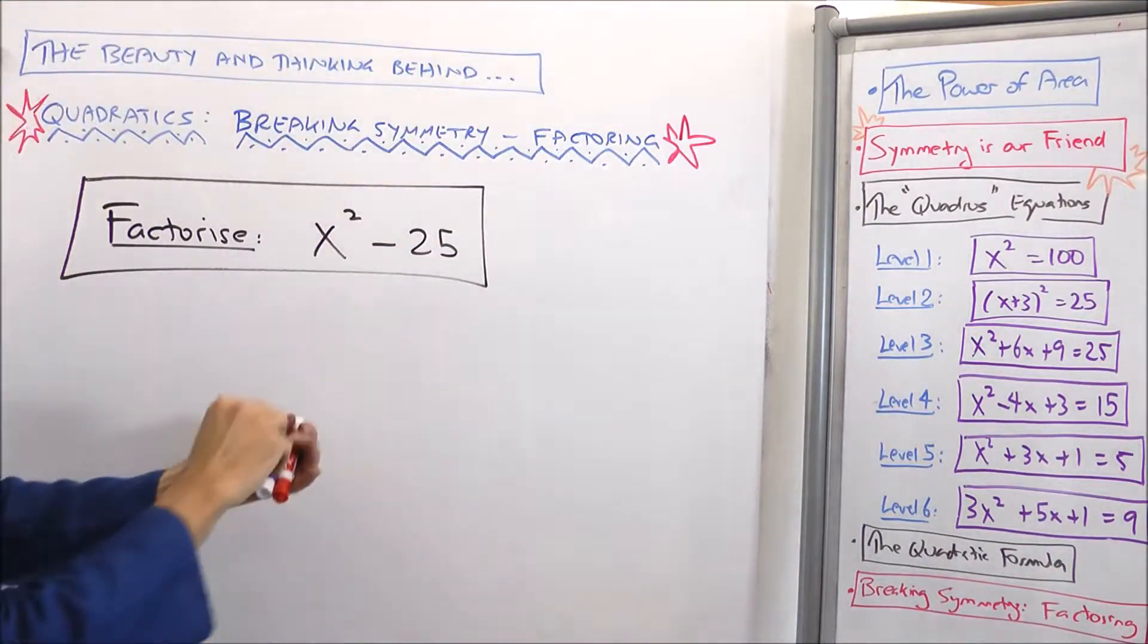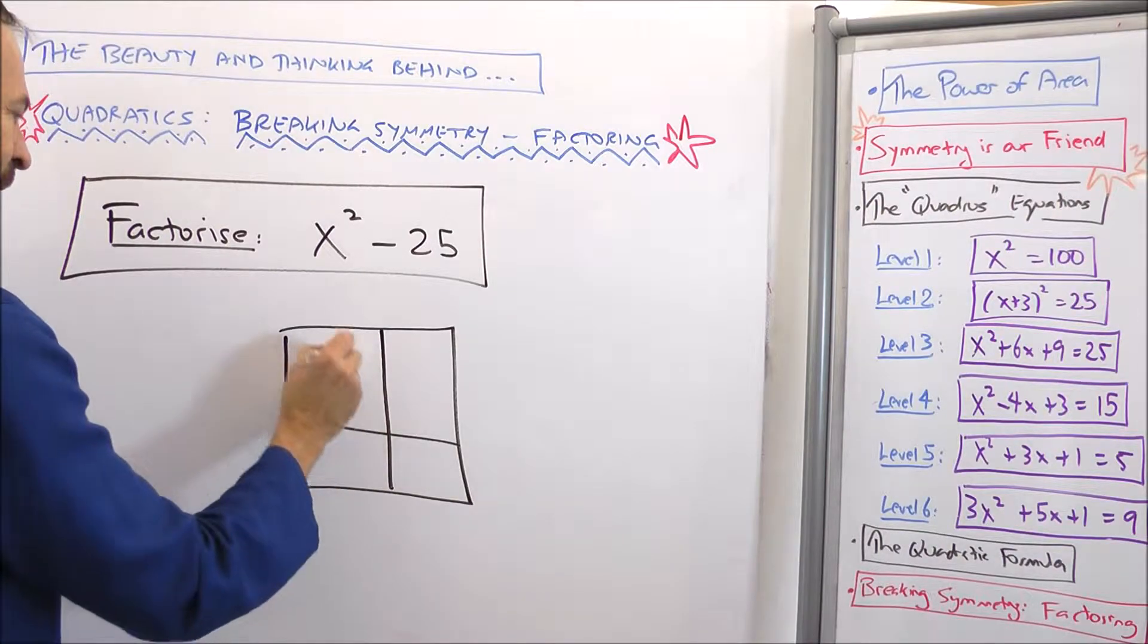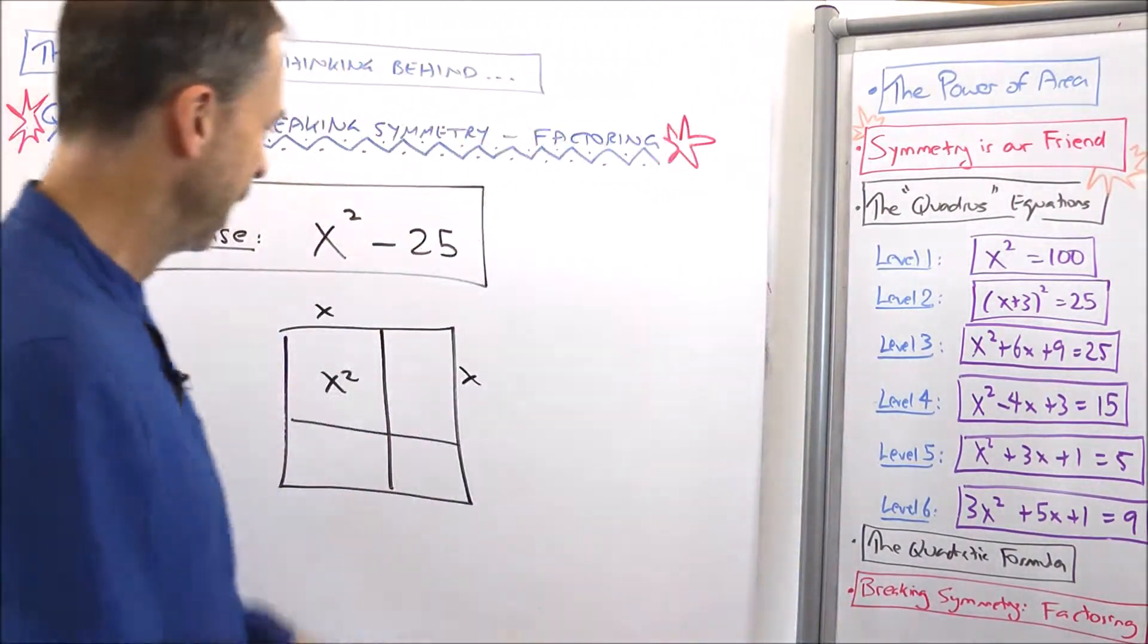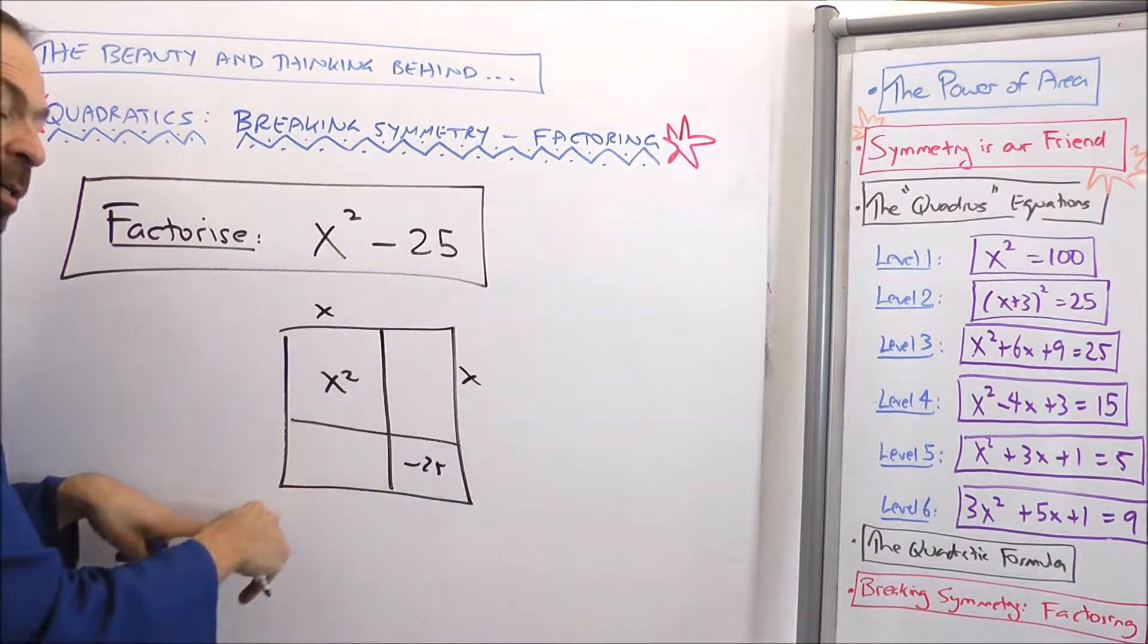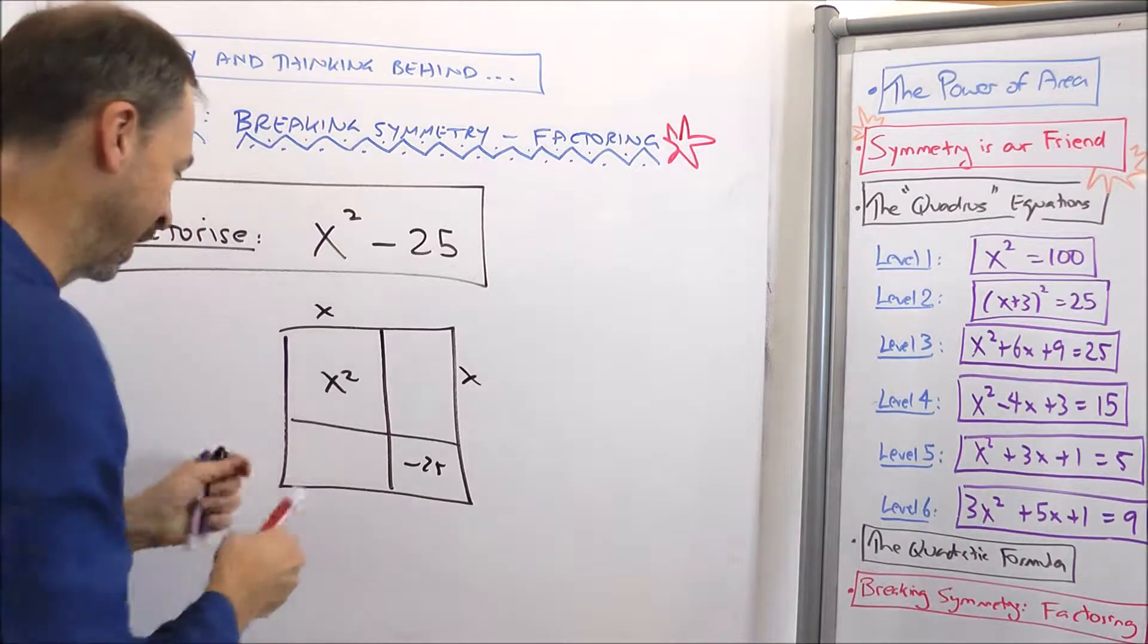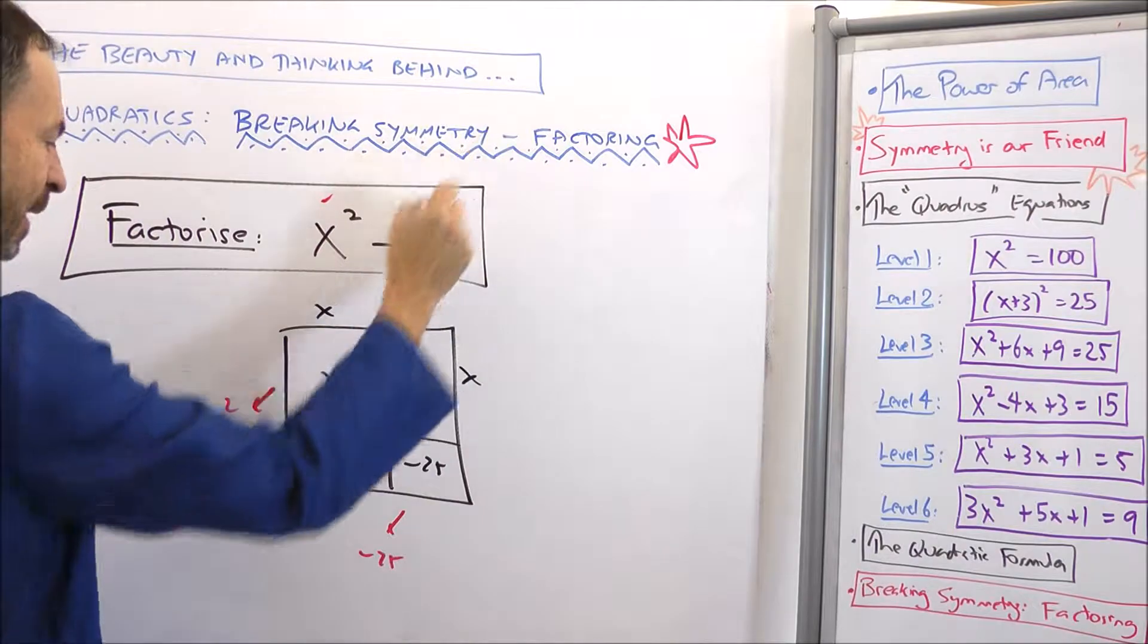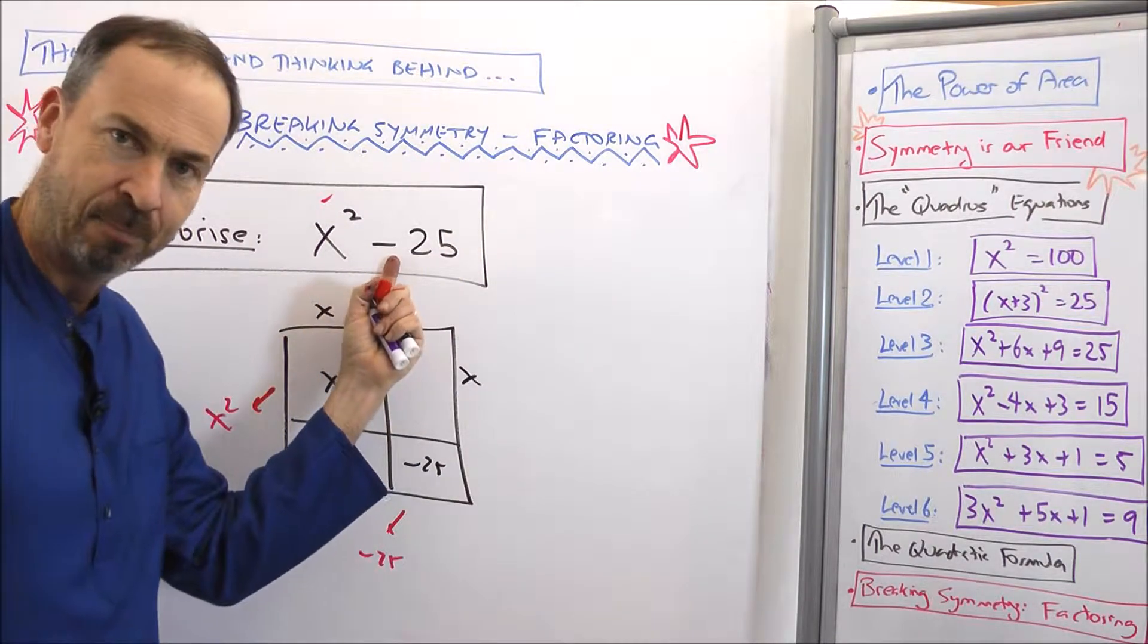Alright. So thinking about that, I'm going to have a rectangle. That's fine. I have an x² piece. And my best guess is it's coming from x times x. I have one piece that's negative 25. And the rest of it has to add up to 0x's. So just be very clear. I've got the x squared. Bingo. I've got the negative 25. Bingo. And this has to add up to 0x's.